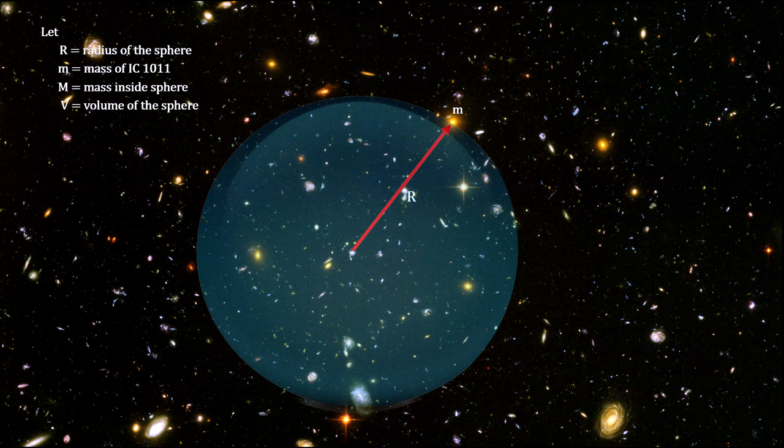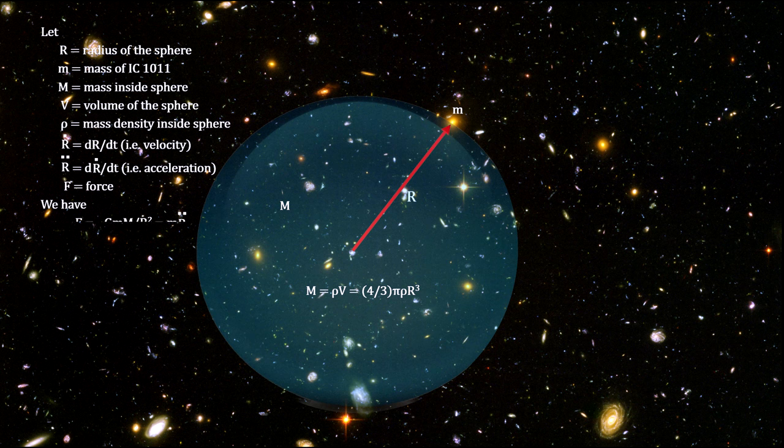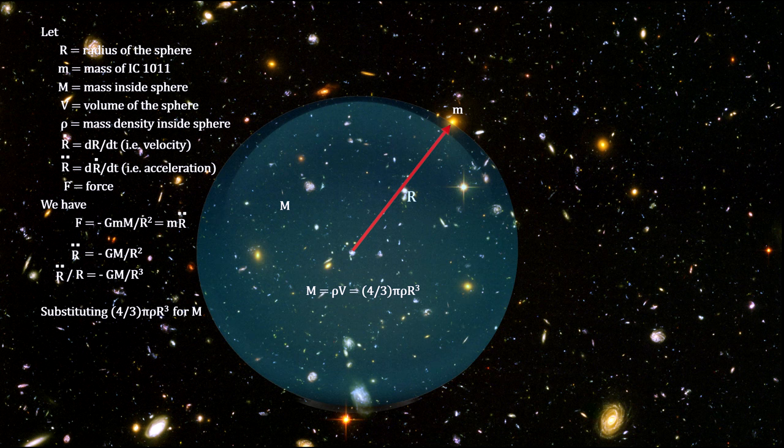we can calculate the gravitational force and acceleration of IC 1101 from all the matter, from all the galaxies within the sphere. And we can use Newton's shell theorem to cancel out all the other gravitational forces in the universe.